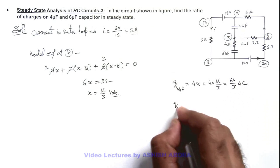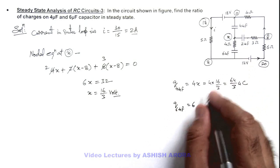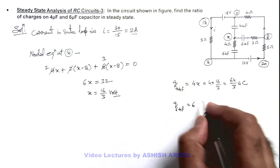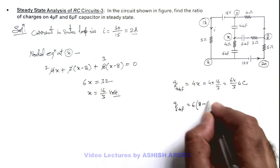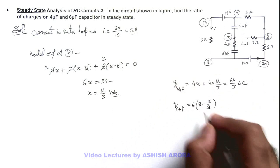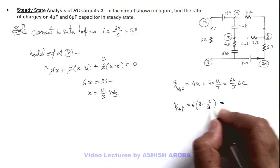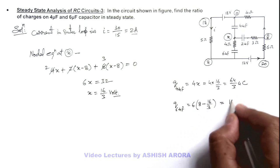And charge on 6 microfarad capacitor we can write it as 6 multiplied by x minus 8. As the value of x is less, we can take it other way, that is 8 minus x which I can write as 16 by 3. So on simplifying I am getting it is equal to 2 multiplied by 8, that is 16 microcoulomb.